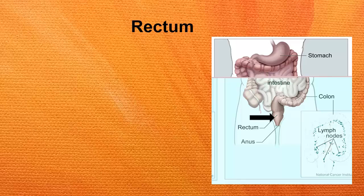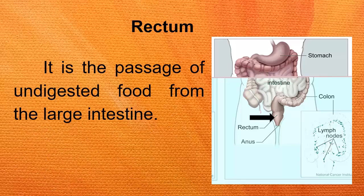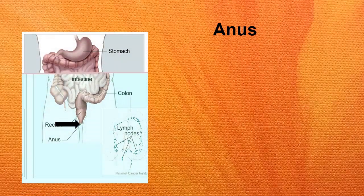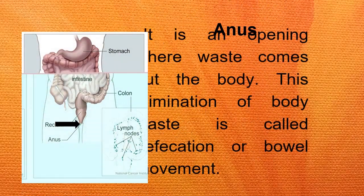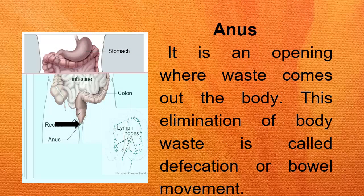The rectum is the passage of undigested food from the large intestine. The anus is an opening where waste comes out of the body. This elimination of body waste is called defecation or bowel movement.